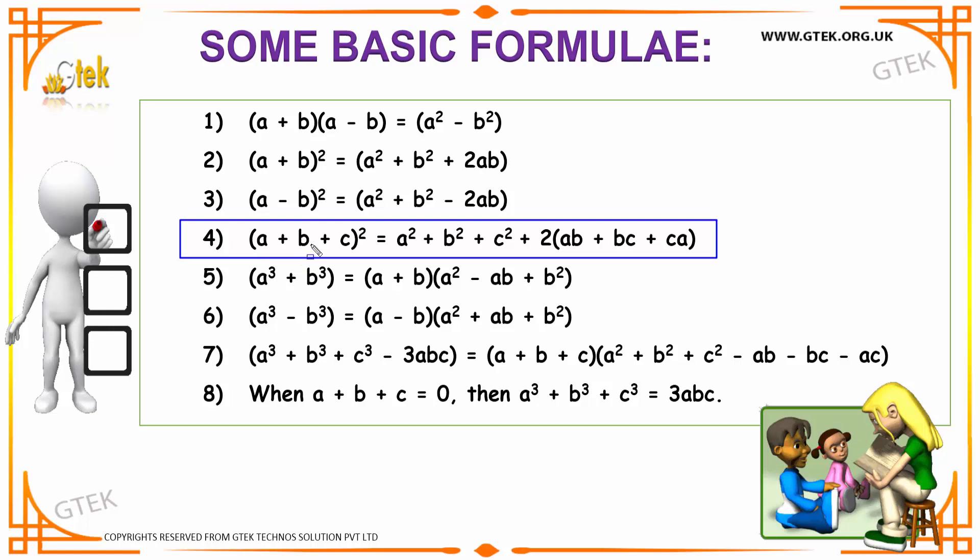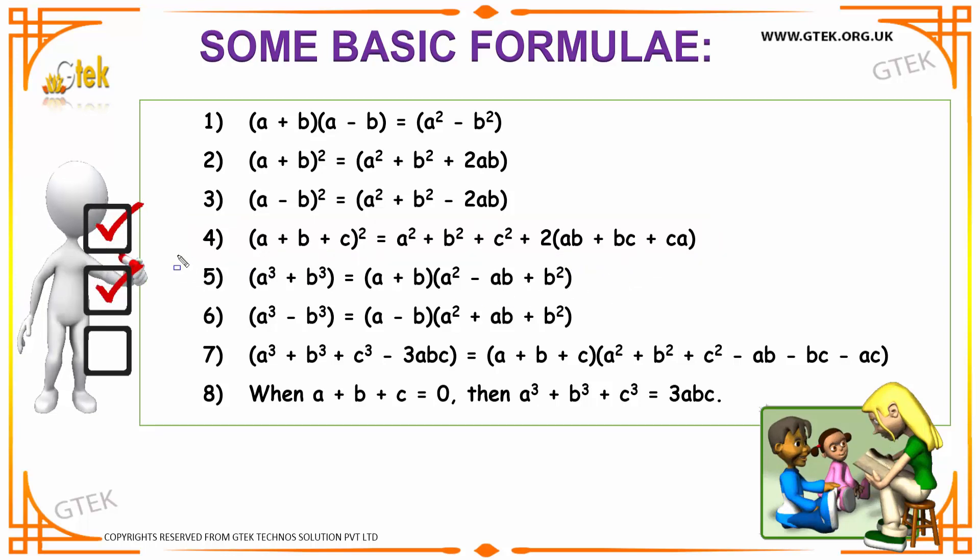We have our fourth interesting formula which says that (a + b + c)² is equal to a² + b² + c² + 2(ab + bc + ca).